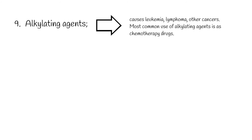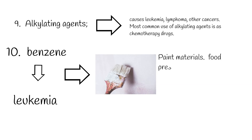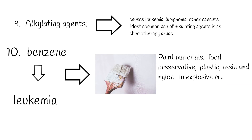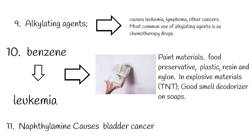10. Benzene causes leukemia. Benzene is one of the most widely used components in world industry. It is used in paint materials such as wall paint, as a food preservative, to make plastic, resin, and nylon, in explosive materials like TNT, and as a fragrance in soaps and deodorants. 11. Naphthalamine causes bladder cancer and is now used only in laboratory research.